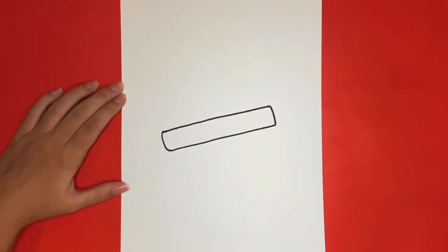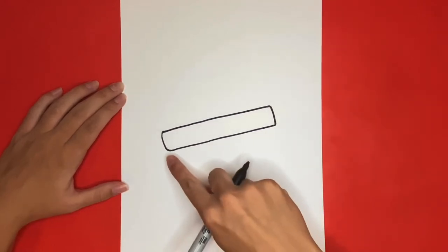Next we are going to draw the bottom half of our bath bomb. For this we are going to draw a big curved line going right here.